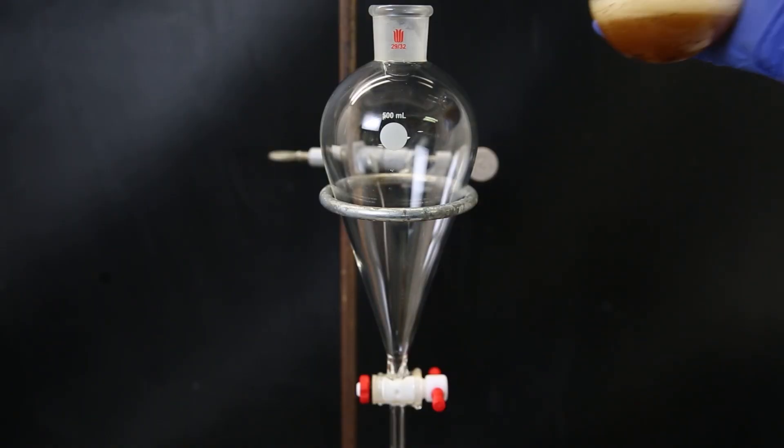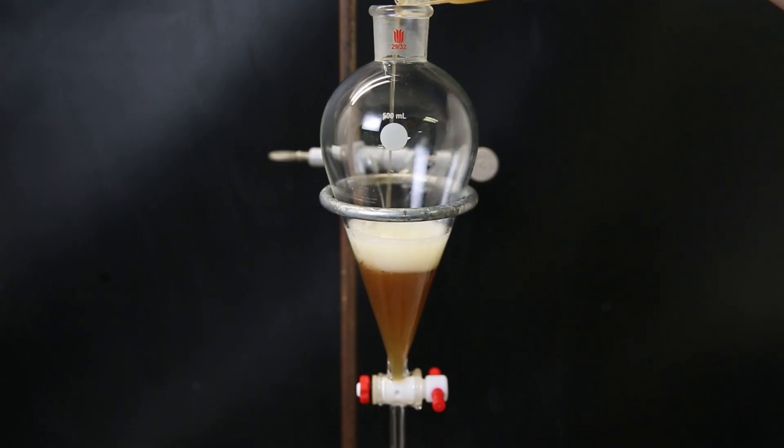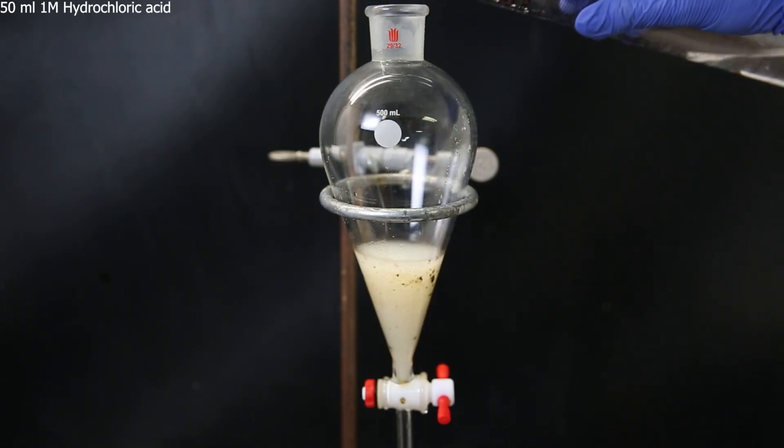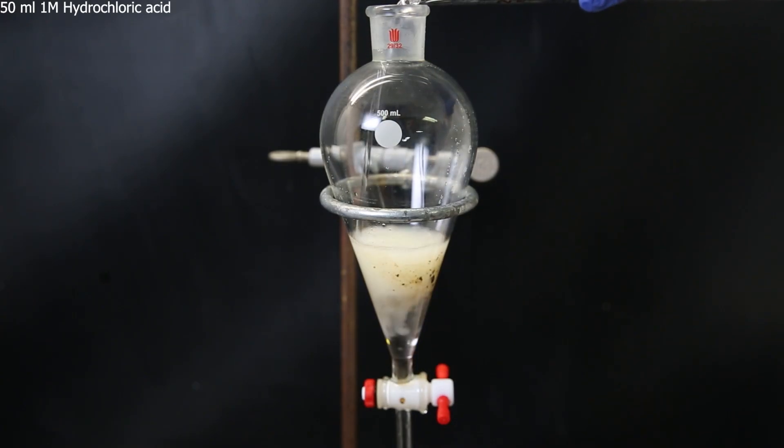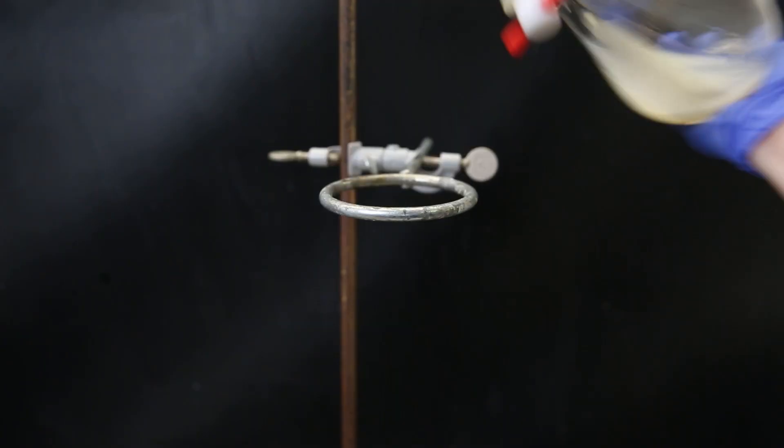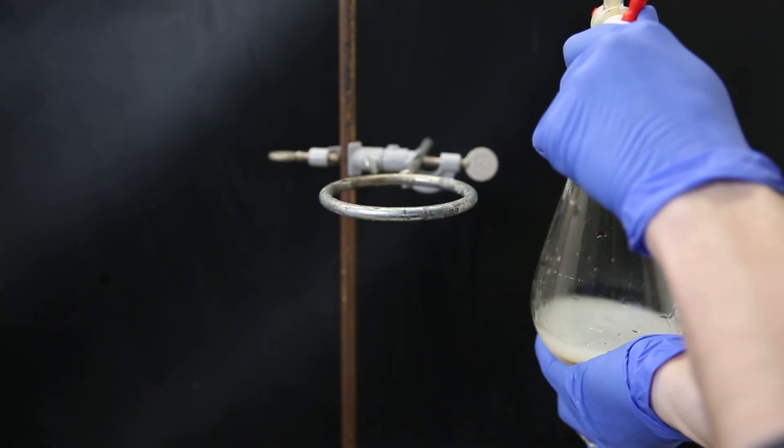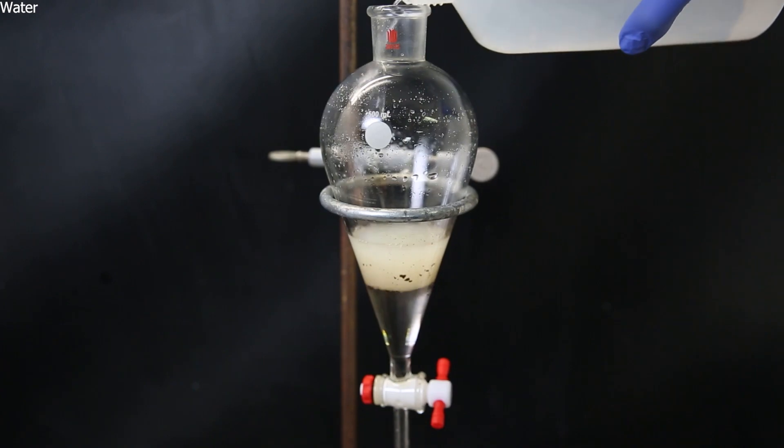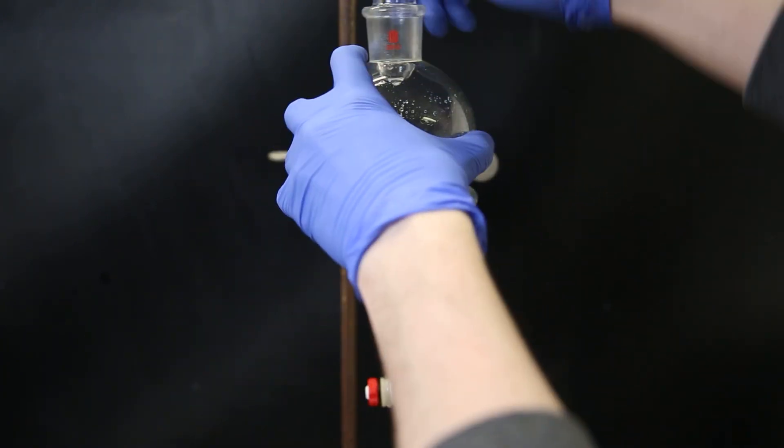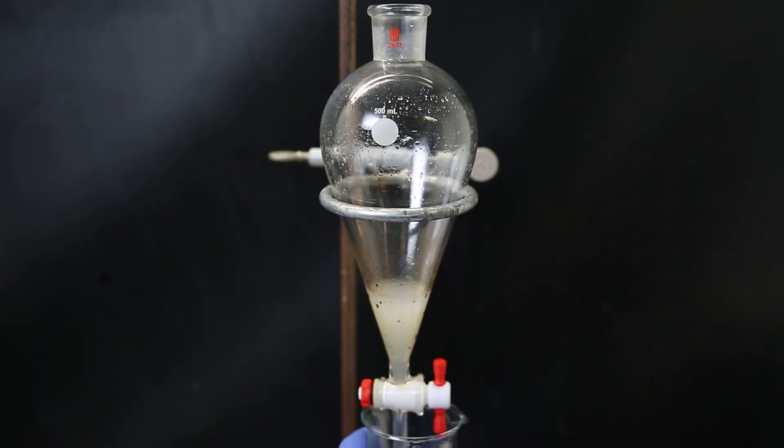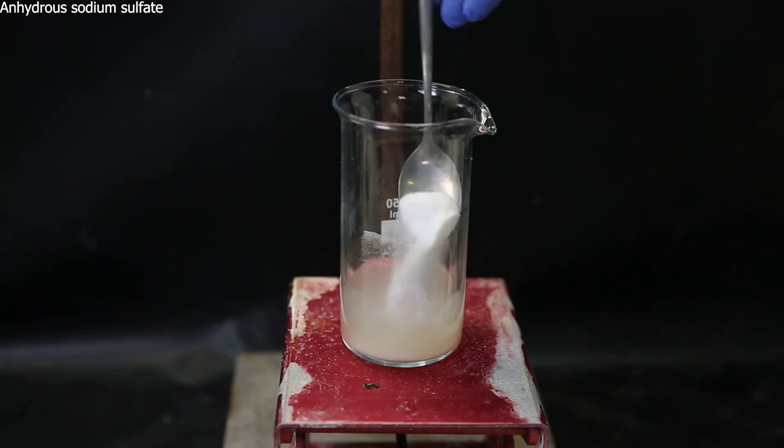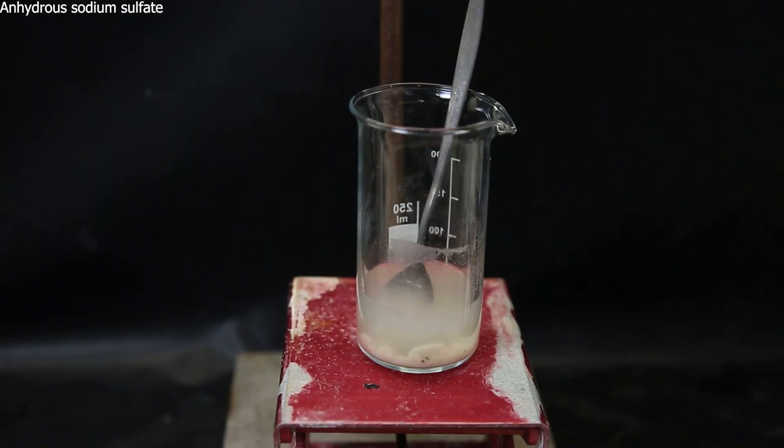I then set up a separatory funnel and pour it all in. I remove the bottom water layer and then again add 50 ml of a 1 M hydrochloric acid solution to make sure all of the DMAP is pulled out. I then wash it once with some water to pull out remaining salts. I separate the layers again and take the upper milky pentane layer. I add some anhydrous sodium sulfate to it to take up remaining water.